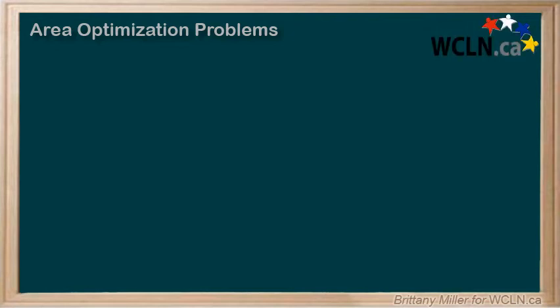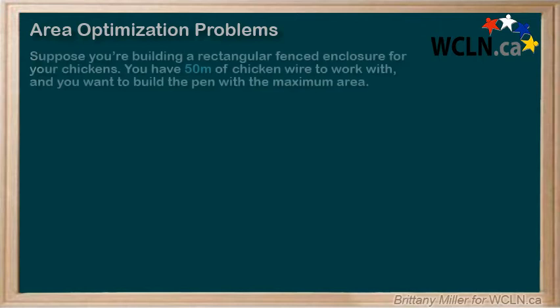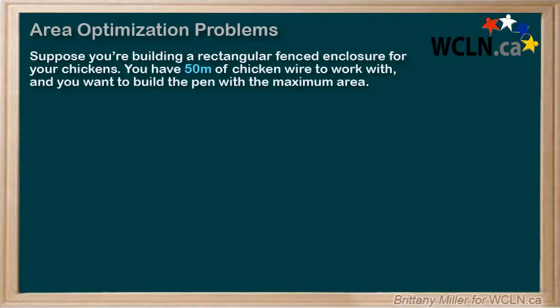We can also solve other types of optimization problems. Let's investigate one that's about geometry. Suppose you're building a rectangular fenced enclosure for your chickens. You have 50 meters of chicken wire to work with, and you want to build the pen with the maximum area.